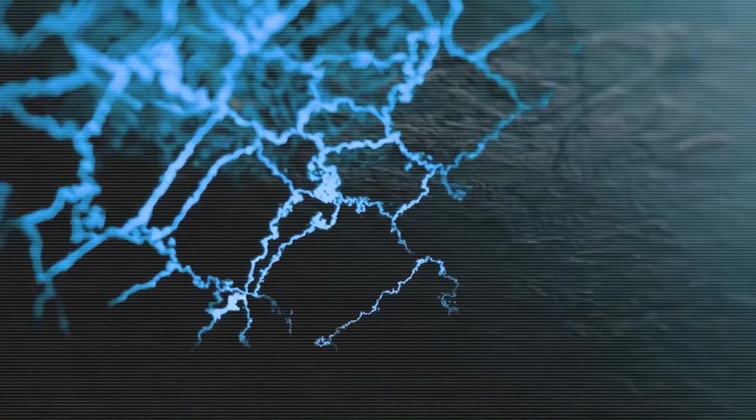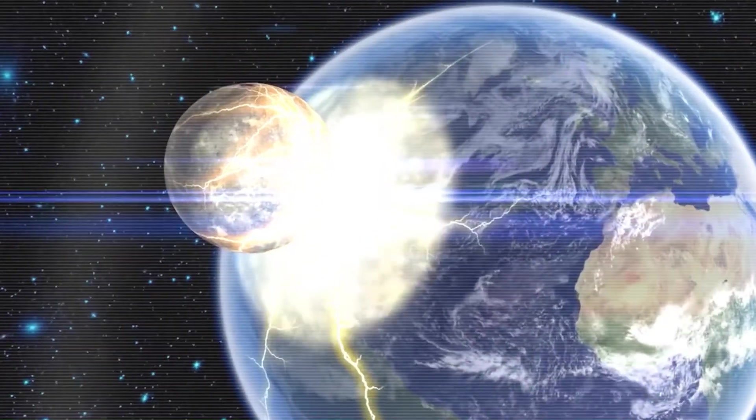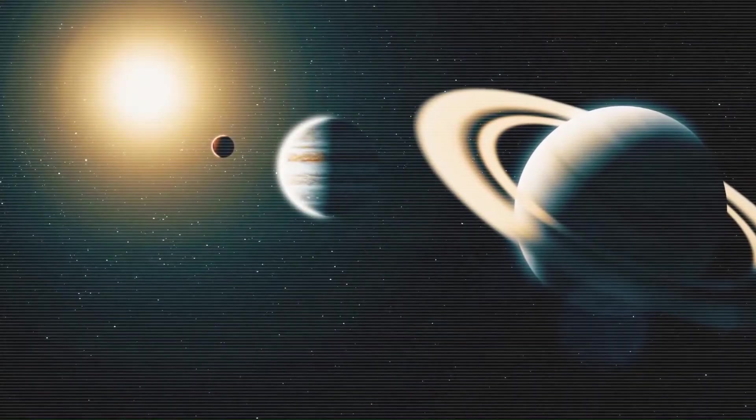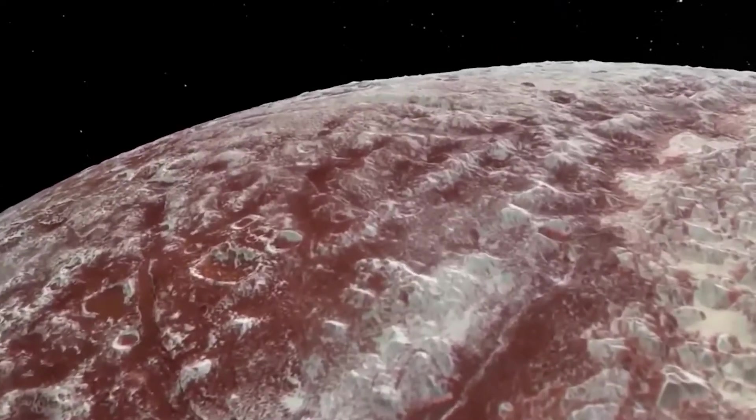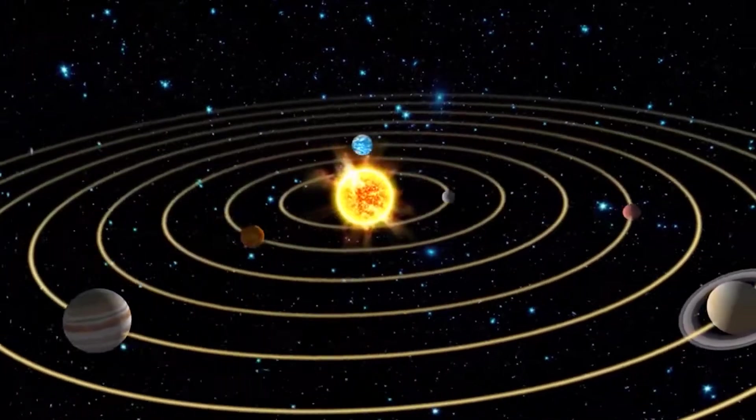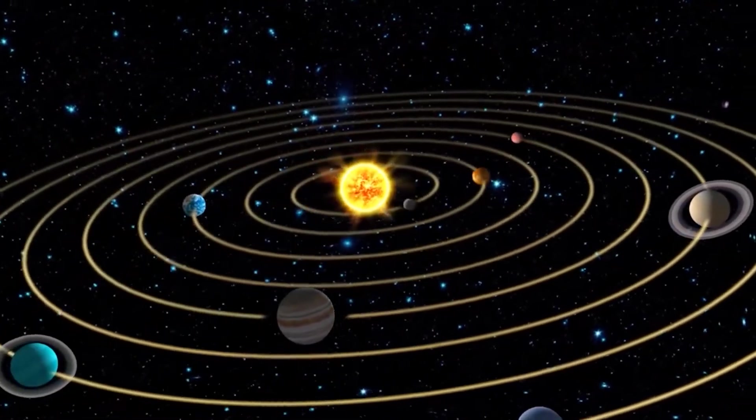In the vast space out there, TRAPPIST-1 is like a group of seven Earth-sized planets. They follow certain patterns because of how they pull each other with gravity, and sometimes this could lead to them bumping into each other. But surprisingly, even with their busy moves, these planets manage to avoid crashing into each other for now.